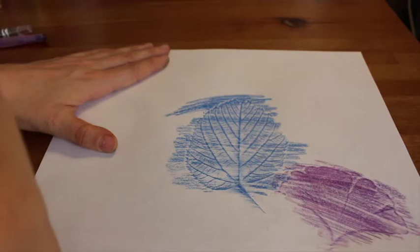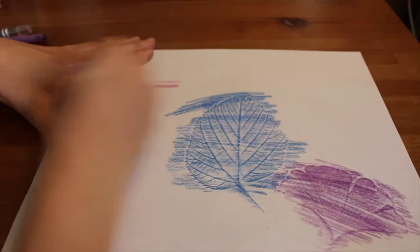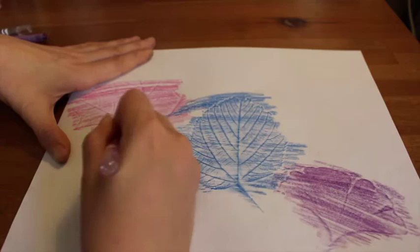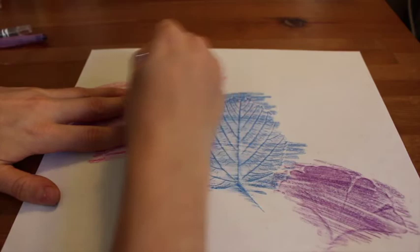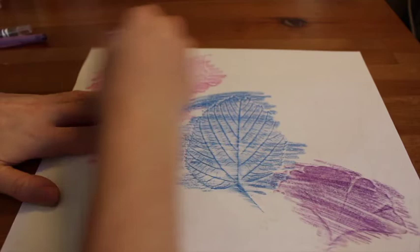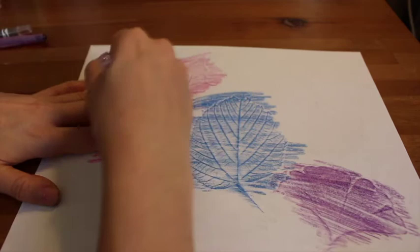Now boys and girls, you can decide where you want your leaf rubbings to be. They don't have to be in the same spaces as mine. I want you to be creative and create your own artwork. Don't copy me. So again, I'm holding that leaf down and I'm carefully coloring back and forth. I'm not pressing too hard, but I'm not pressing really light either. You need some pressure with your crayon so that the beautiful texture of the leaf will transfer onto your paper.